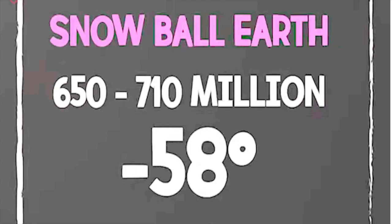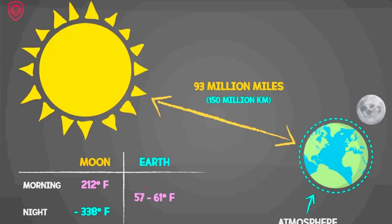If we look at the past, in Proterozoic times — 650 to 710 million years ago — the temperature was minus 58 degrees Celsius and the entire Earth was under ice, even the equatorial region. What was the reason behind it? Why did melting take place? And why was there a global cooling event? We'll see everything in detail in this video.